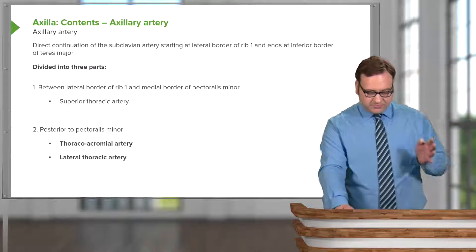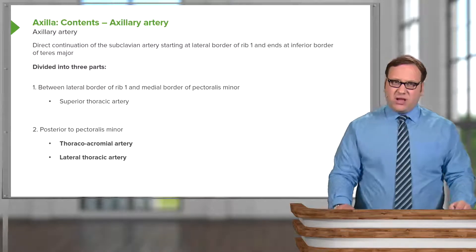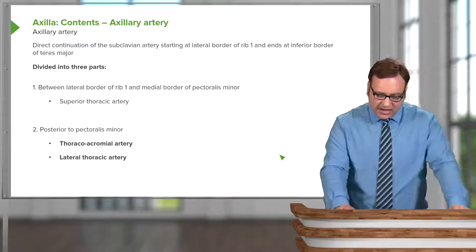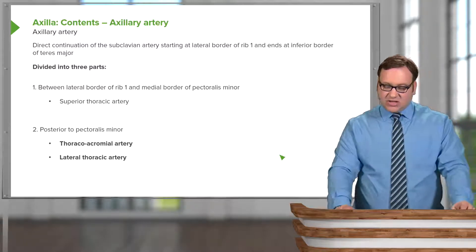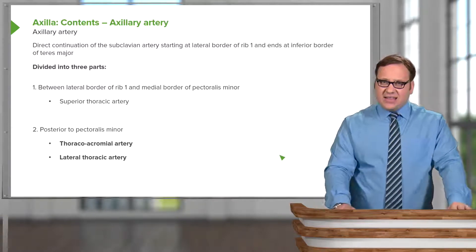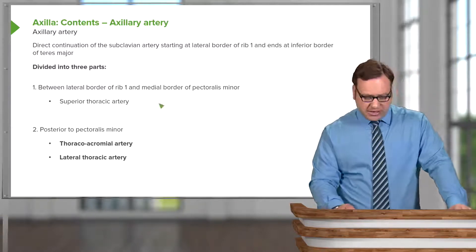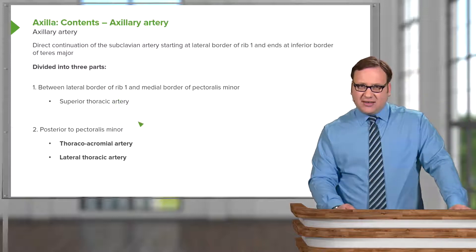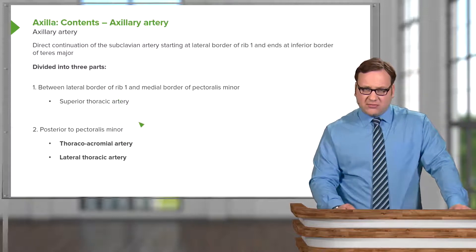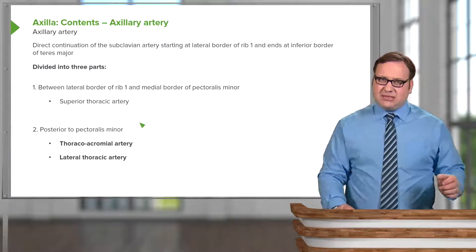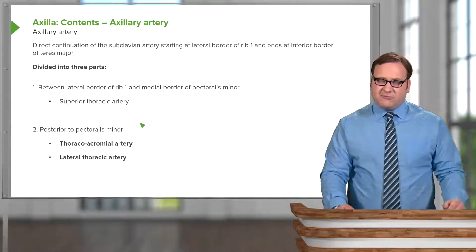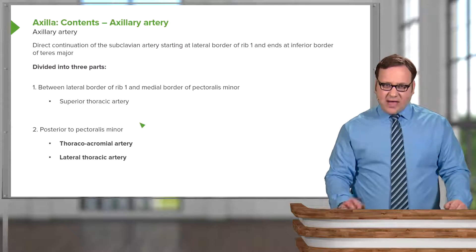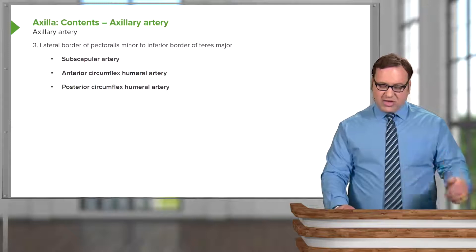Looking at the three parts of the axillary artery: it is a direct continuation of the subclavian artery starting at the lateral border of the first rib, ending at the inferior border of teres major, divided into three parts. Each part gives rise to numerous blood vessels — one coming from the first part, two from the second part, and three from the third part.